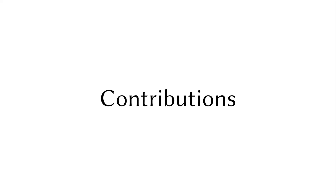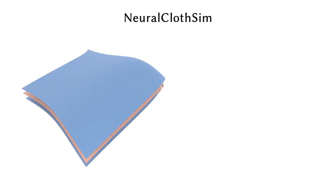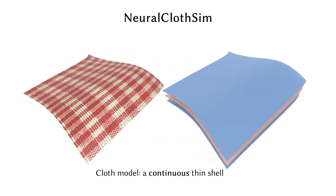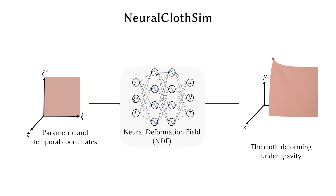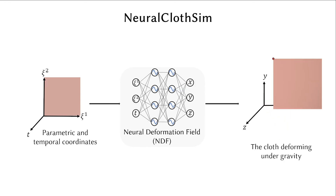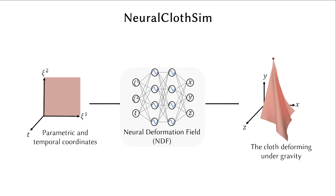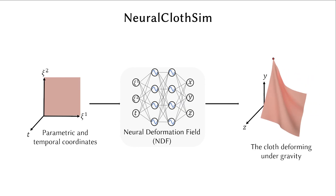In response to these limitations, we propose Neural Cloth Sim, a new approach to cloth quasi-statics using continuous thin shells. Neural Cloth Sim encodes the quasi-static deformation in neural network weights. The input to the network are the parametric coordinates on the cloth and an optional temporal coordinate, and the output are the three-dimensional states until equilibrium.